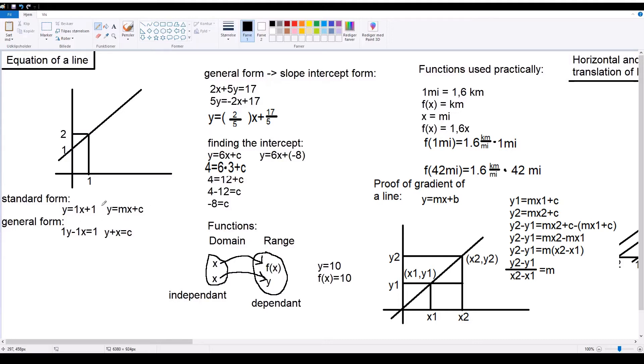y here is an arbitrary number, same with x, or they're both variables, while m is how many units the line moves on the y-axis for every unit it moves on the x-axis, while c is the y-intercept.